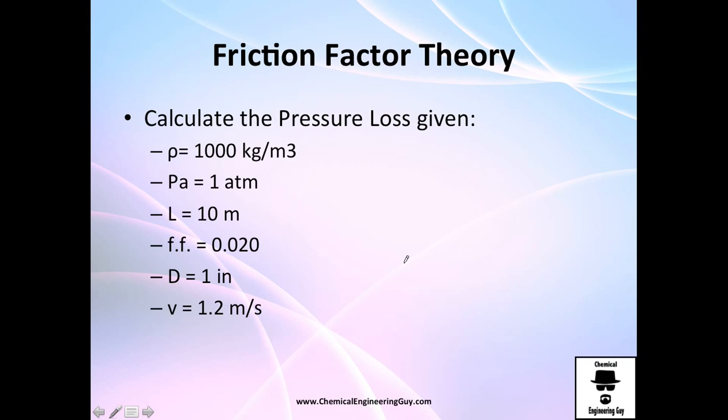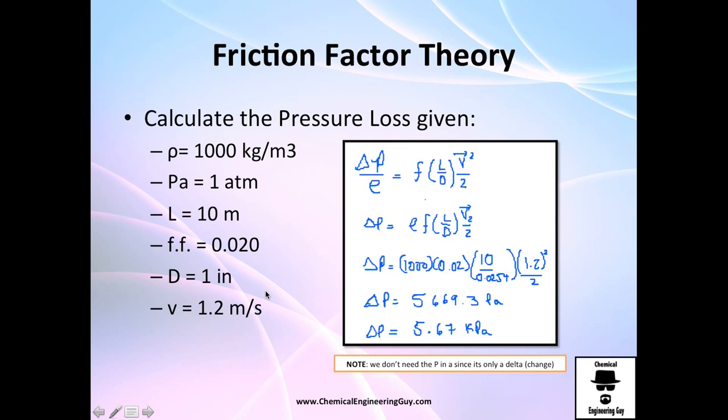Given this formula, let's calculate the pressure loss. We have 1000 right here. They give you the initial pressure and the length. I'm going to give you the friction factor number, which is 0.02. The diameter is 1 inch and velocity is 1.2 meters per second. From the last equation, we had this pipe and we want to calculate the pressure drop. It's funny because we don't need the initial pressure. We are just calculating the pressure drop, so I'm not going to use it.